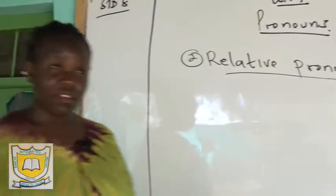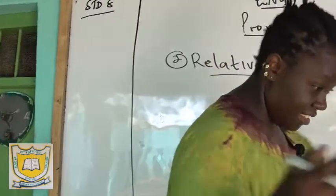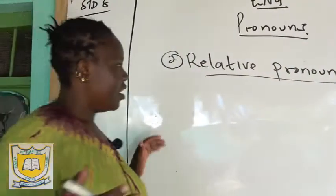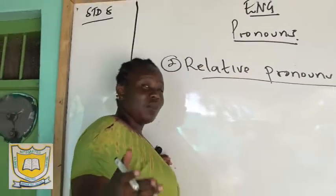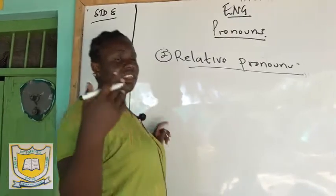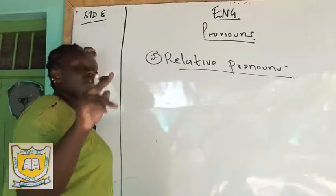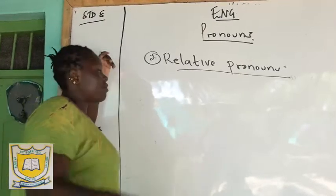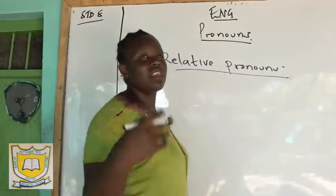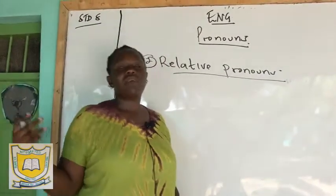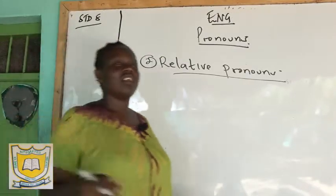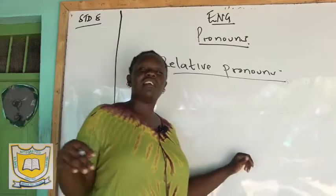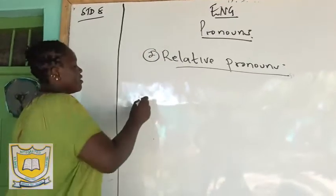We talked about how to use personal pronouns in a sentence — this is very common, especially in questions 16 to 25. If you have two subjects, use the nominative pronouns. If you are comparing, use the nominative pronouns. But if a pronoun comes after a preposition, it should be objective.